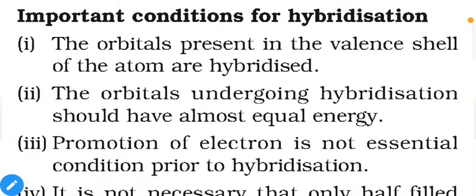Conditions for hybridization: First, only orbitals present in the valence shell of atoms are hybridized. Second, orbitals undergoing hybridization should have almost equal energy — their energy gap should be limited. If the energy gap is comparatively large, they cannot be used in hybridization, because in hybridization energies become almost equal, which is possible only when the gap is minor. For example, the energy gap between 2s and 2p orbitals is comparatively small, which is why they can participate in bond formation.